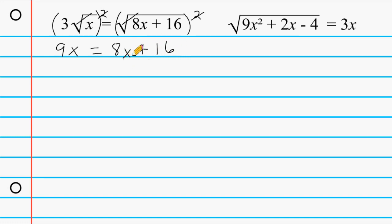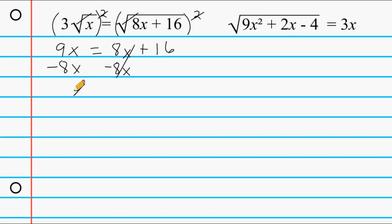Now we're going to take this x term and move it over to the left, and because it's positive we're going to write a negative underneath. So 8x minus 8x is 0, so that doesn't exist on the right hand side anymore. We write this over on the left, and 9x take away 8x is 1x, so we only have a single x left, and on the right hand side we have 16. Because x is isolated we already have our answer: x is equal to 16.